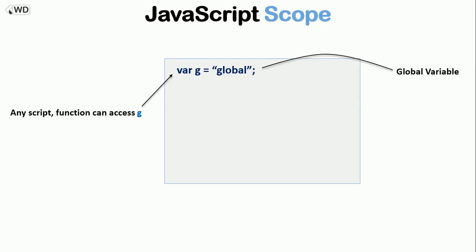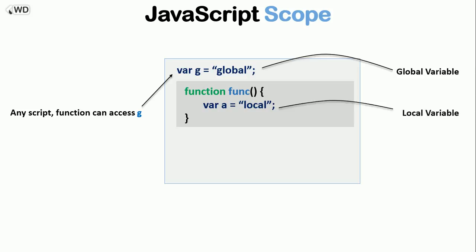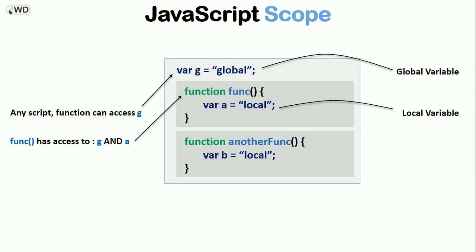Now let's say I created a new function called 'fang' and it has a variable a equals 'local'. The variable a here is a local variable, and the function 'fang' has access to both g and a — so the function 'fang' has access to the global variable and the local variable.